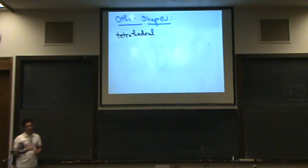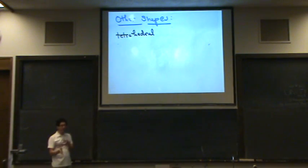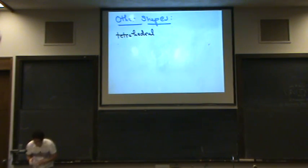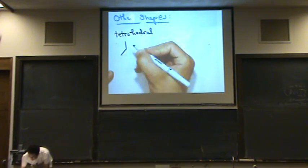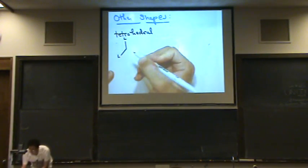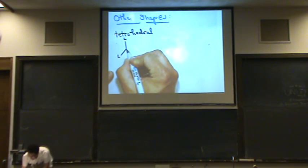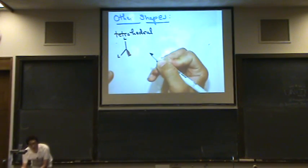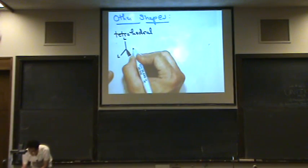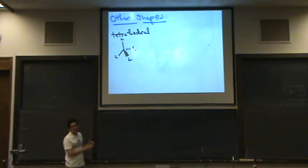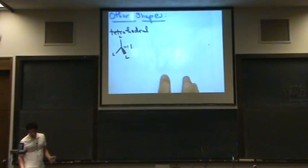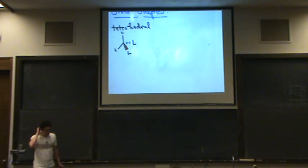You'll probably remember tetrahedral from your first gen chem course — that's the one where everything has a 109.5 degree bond angle. It looks like this: two of the ligands will be in the plane, one will come out at you (I draw a wedge to show it's coming out of the board), and the other one goes into the board, away from you. So two ligands are in the plane, one's coming at you, one's going away. That's the tetrahedral shape.